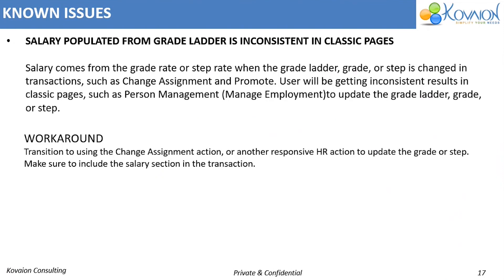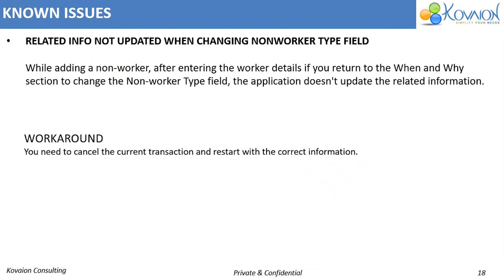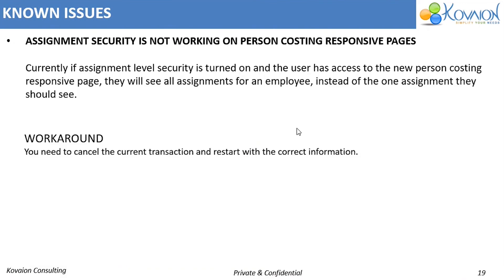Some of the known issues are: first, salary populated from grade ladder is inconsistent on classic pages — the workaround is to use responsive UI pages. Second, related info is not updated when changing non-worker type; if we try to change the non-worker type in the particular record, an error will pop up and we have to restart. Third, assignment security is not working on person costing responsive pages — when an employee searches for a newly hired employee's responsive UI pages, all pages are shown instead of a single page.